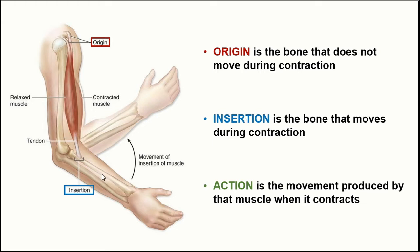The insertion of a muscle is the bone that moves when that particular muscle contracts. The insertion of the biceps brachii is the proximal part of the radius. When the biceps brachii contracts, the radius and the rest of the forearm and hand move, making the radius the insertion point. The action is the movement produced by that muscle during contraction — for the biceps brachii, that action is to flex the forearm at the elbow joint.